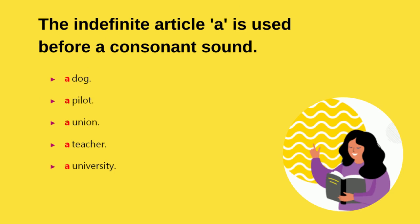First of all, we will discuss the indefinite article 'A' and 'An'. 'A' is used before consonant sounds. The vowels are A, E, I, O, U — words other than these are consonant words. When a word gives a consonant sound, we use 'A' before it. Like: a dog, a pilot, a union, a teacher, a university.